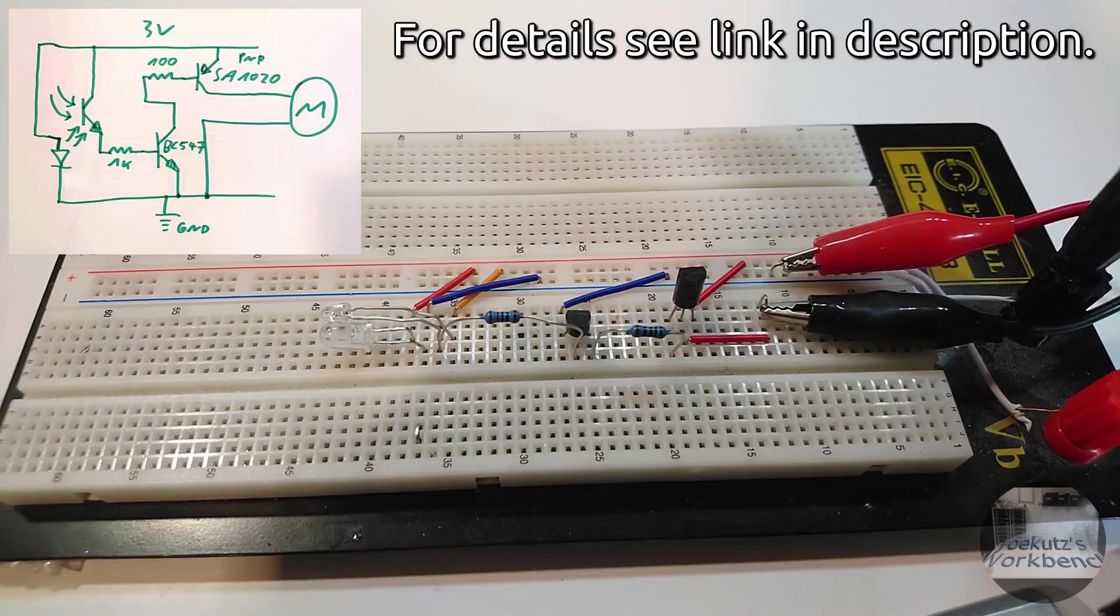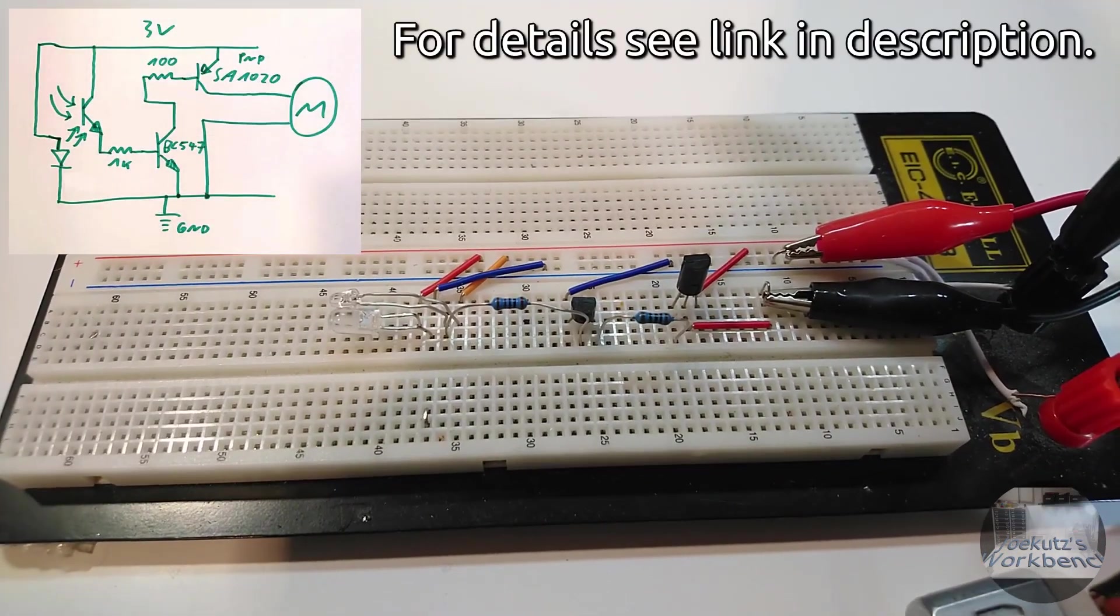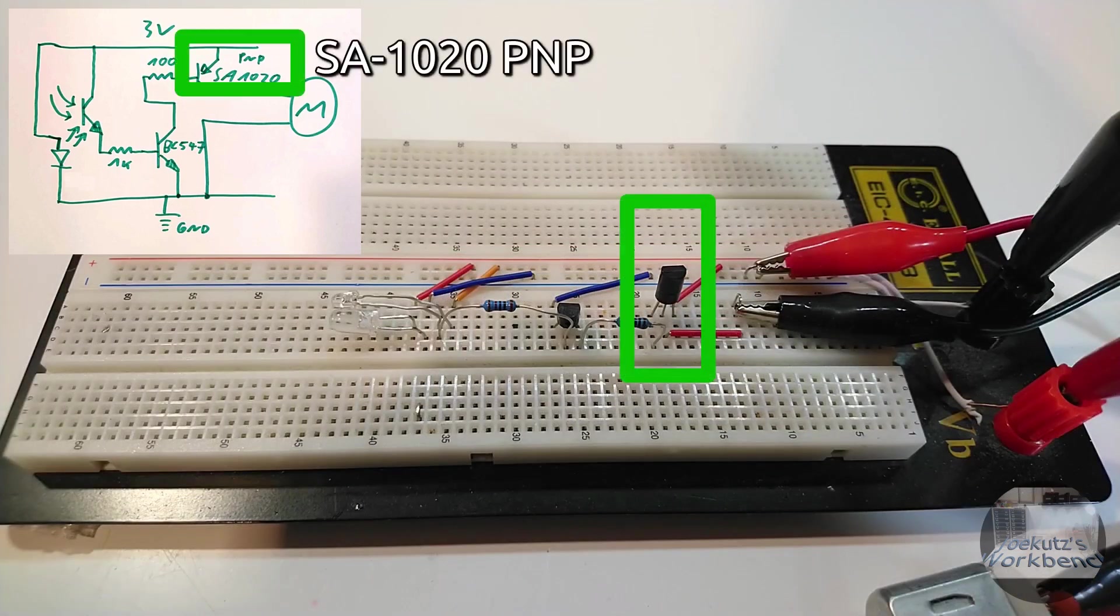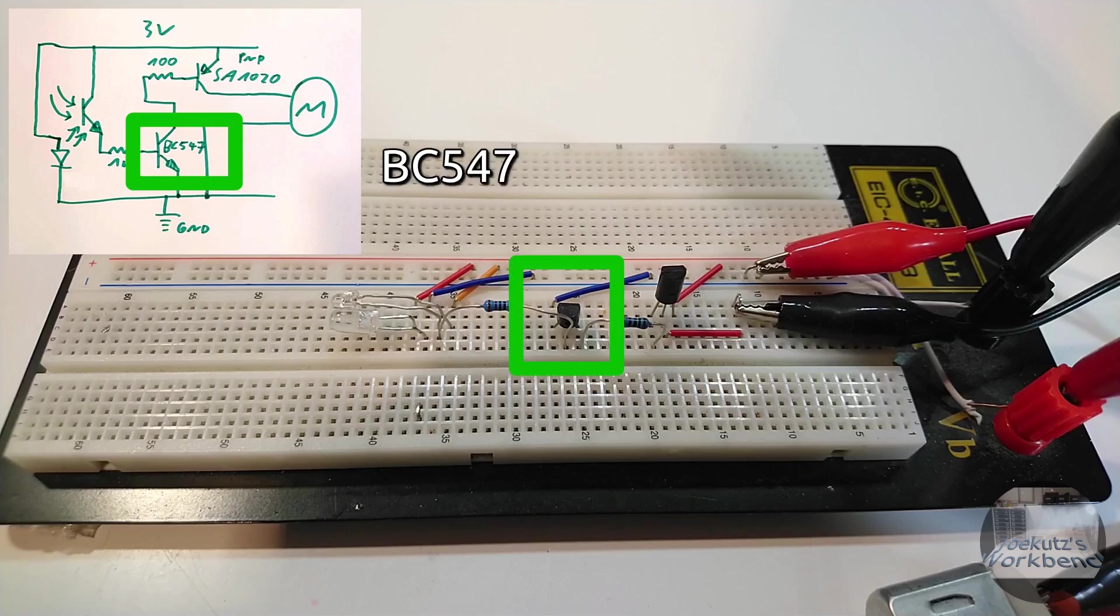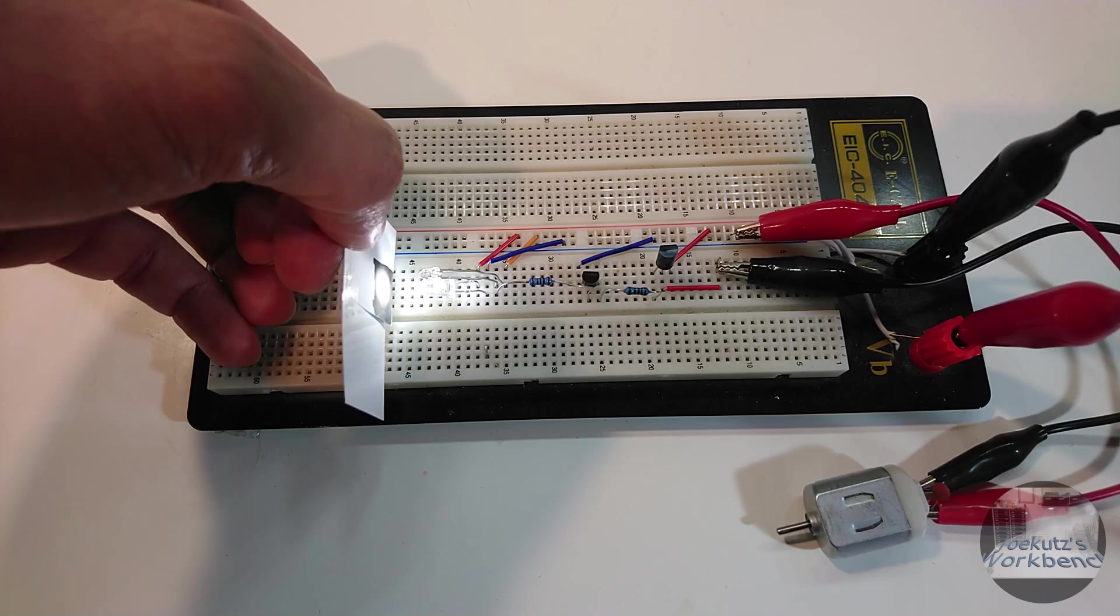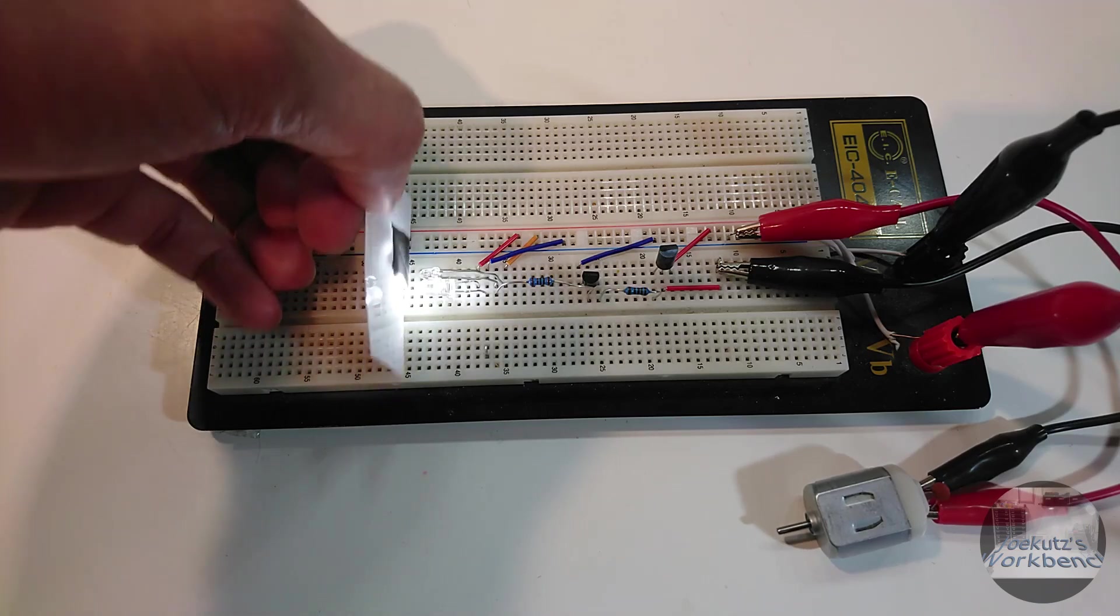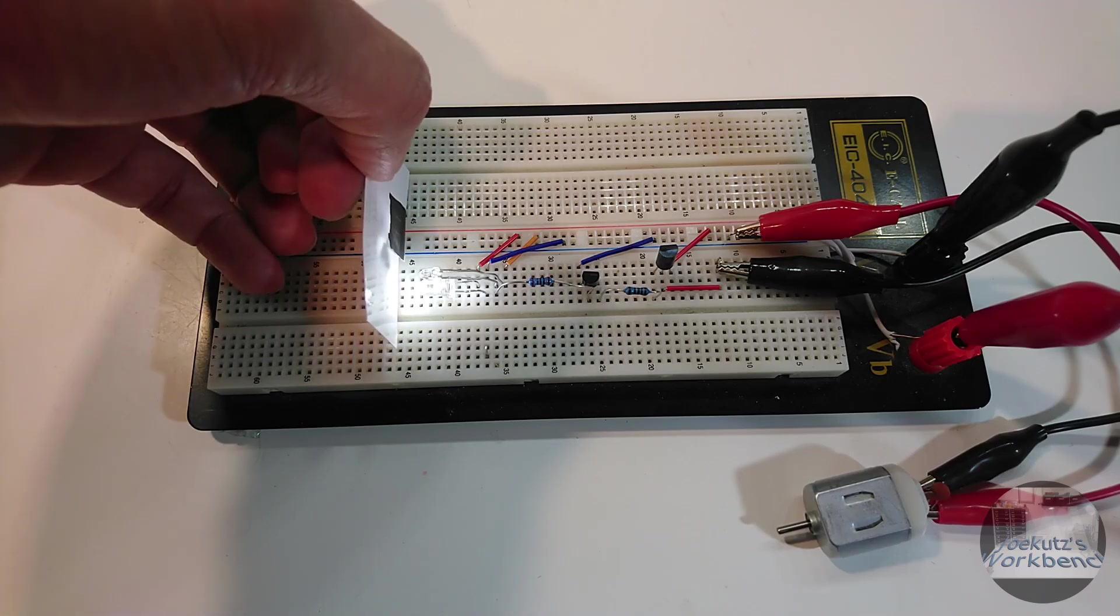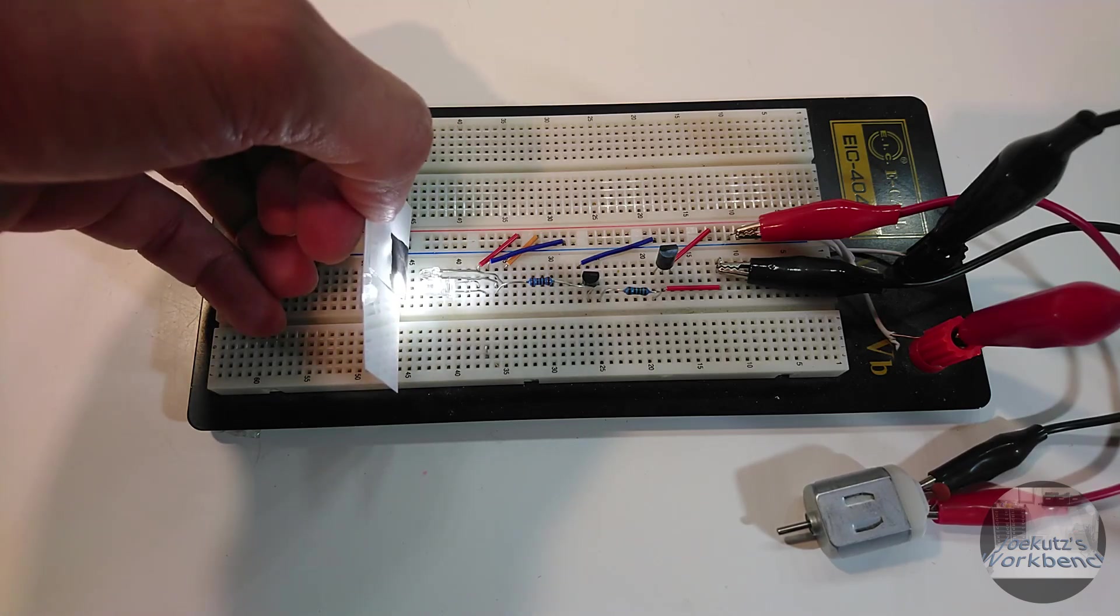I started with laying out the schematics on a breadboard. The motor is driven by a large transistor, which is driven by a small transistor, which is driven by a photo transistor. Something white in front of that transistor reflects back light from an LED and makes the motor turn.